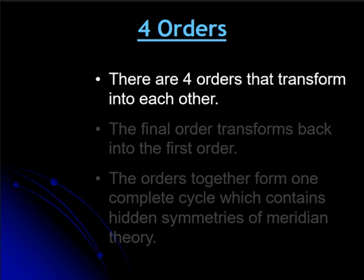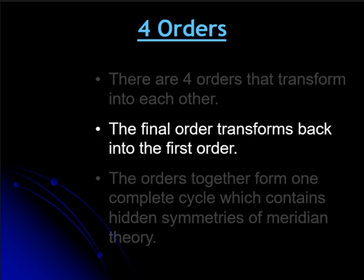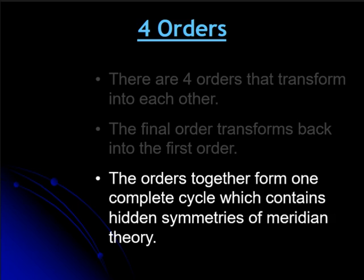We're going to be using these correspondences in the following analysis. To start, we're going to have four orders that transform into each other. The final order transforms back into the first order. The orders together form one complete cycle, which contains hidden symmetries of meridian theory.